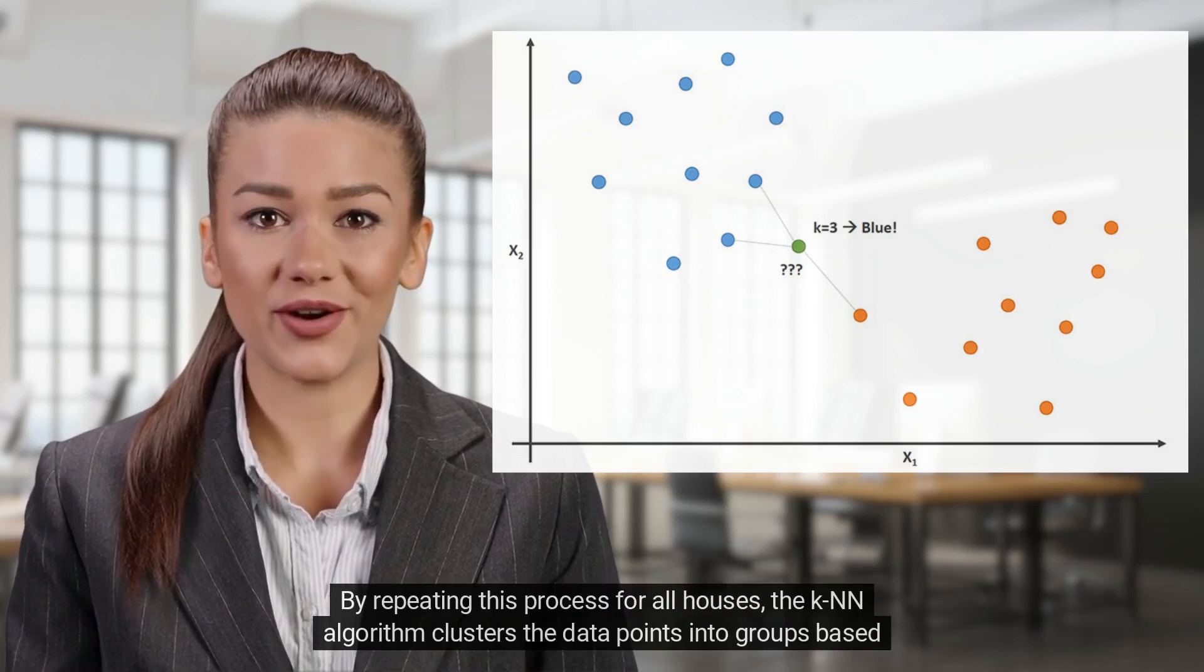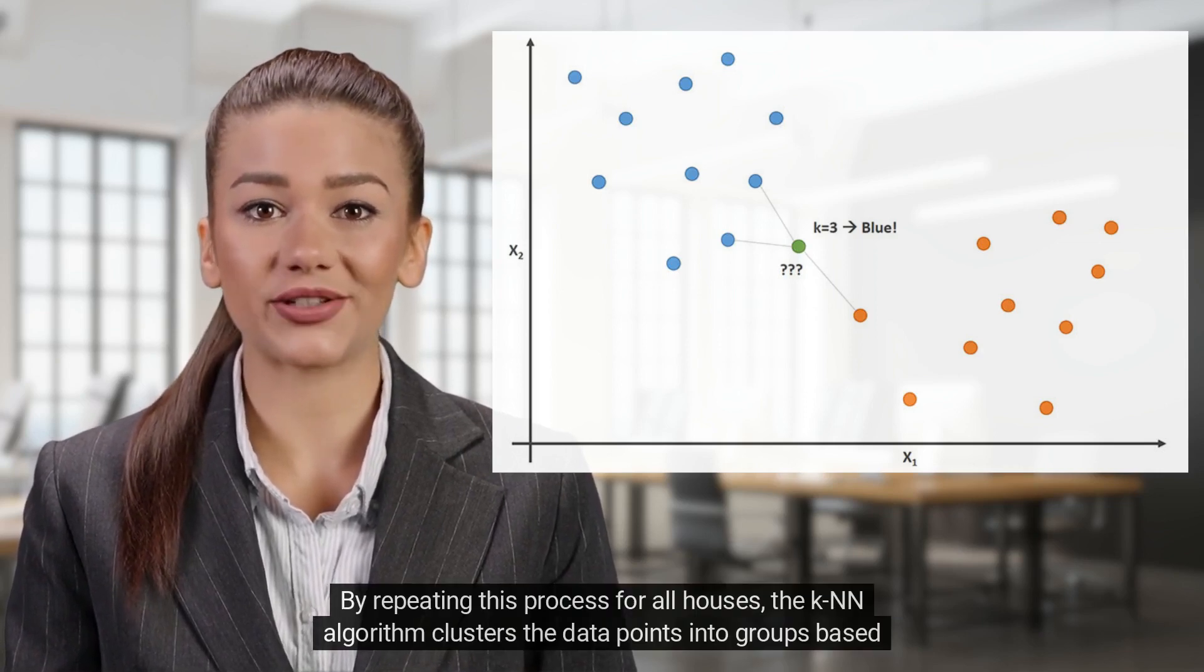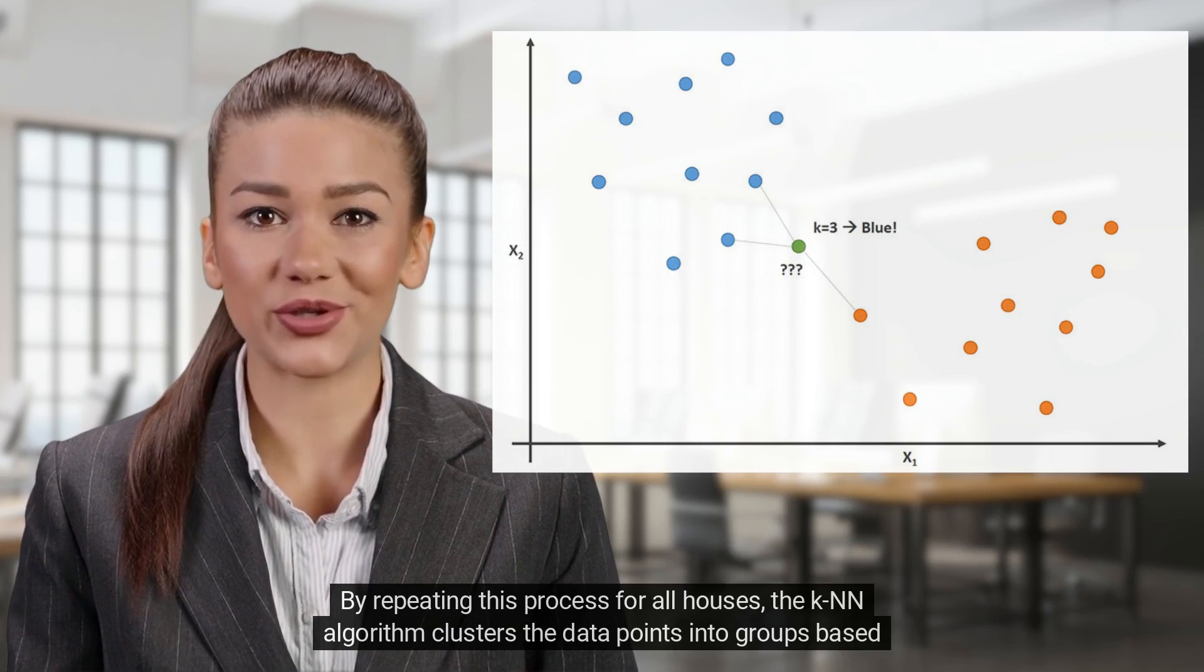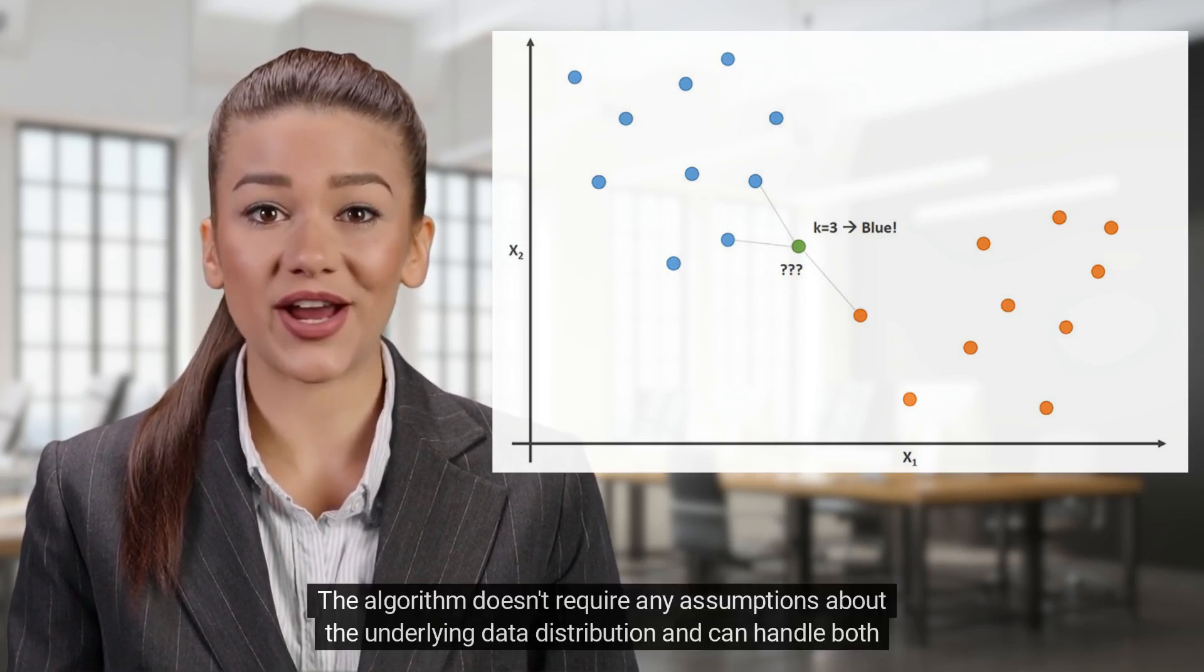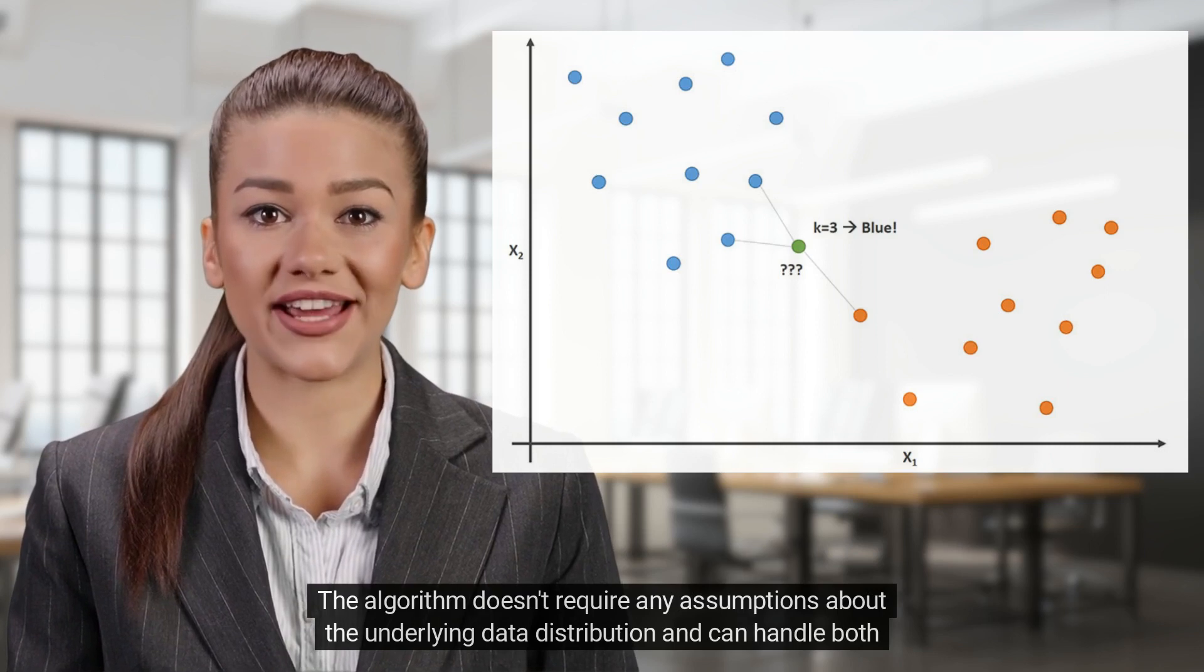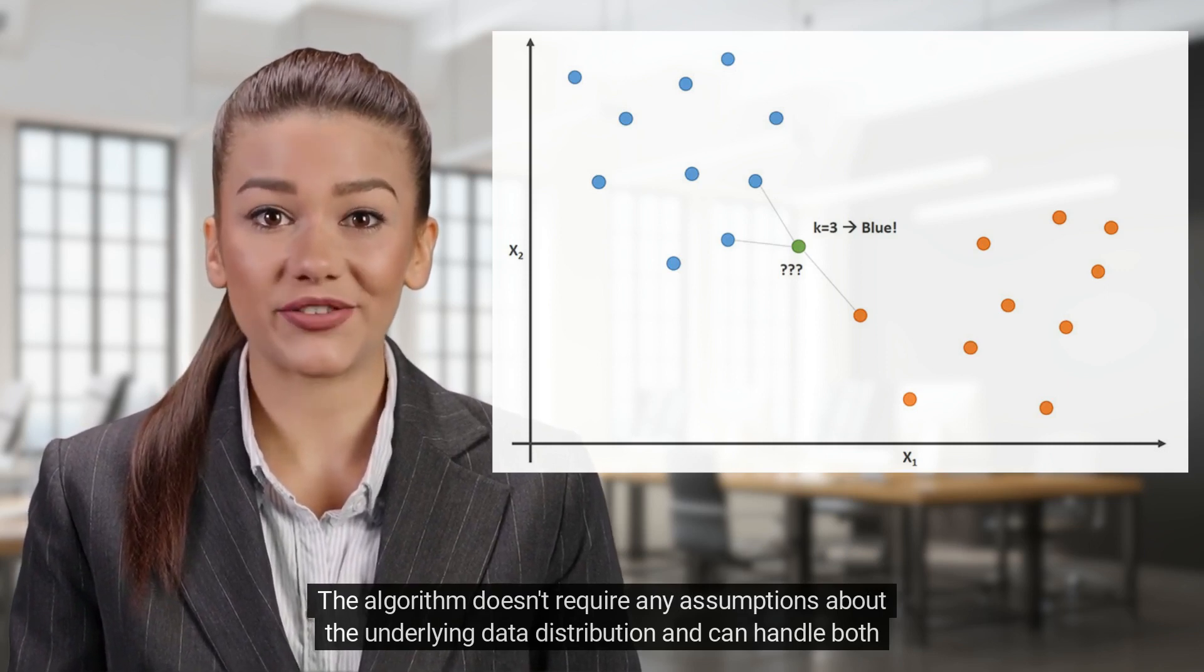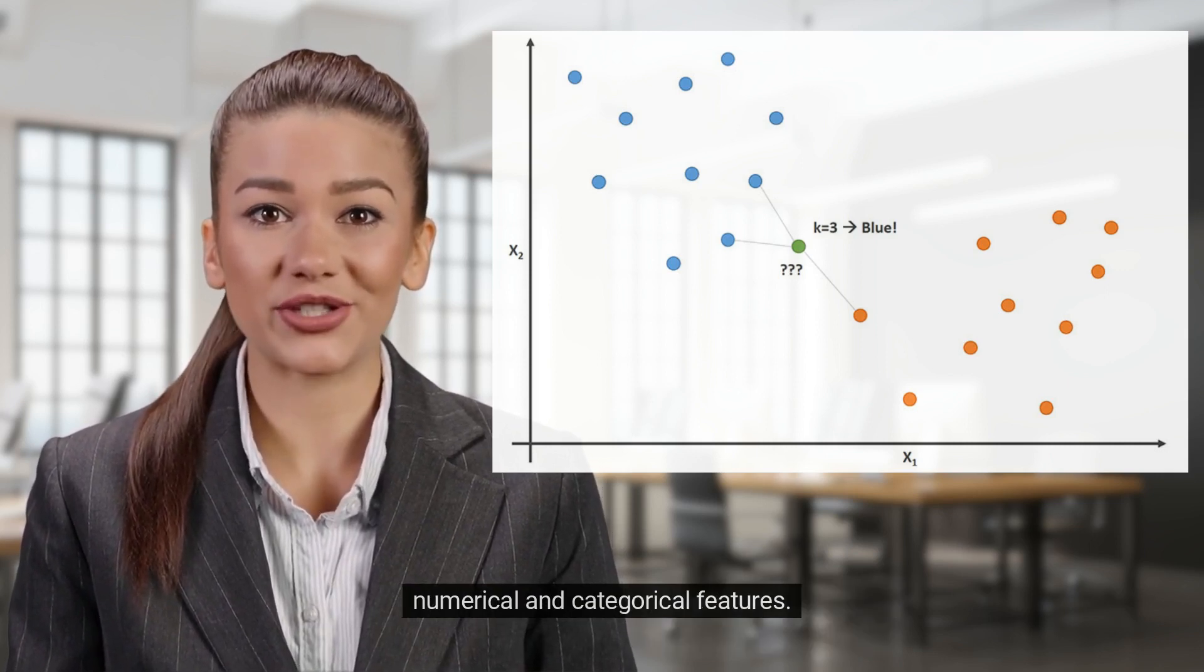By repeating this process for all houses, the K-N-N algorithm clusters the data points into groups based on their similarities. The algorithm doesn't require any assumptions about the underlying data distribution and can handle both numerical and categorical features.